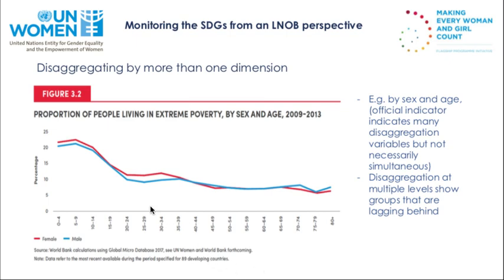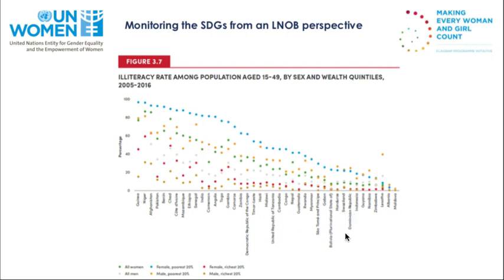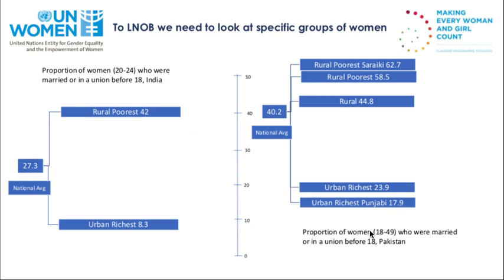This is looking at living in extreme poverty separated out by men and women — the overall trend is similar, but not the same. This is looking at the literacy rate for girls. It's difficult to read — you've got all women, the poorest women, the richest women, and men in here too. This is really bringing up the fact that we need to look at specific subgroups in order to find the areas of interest.